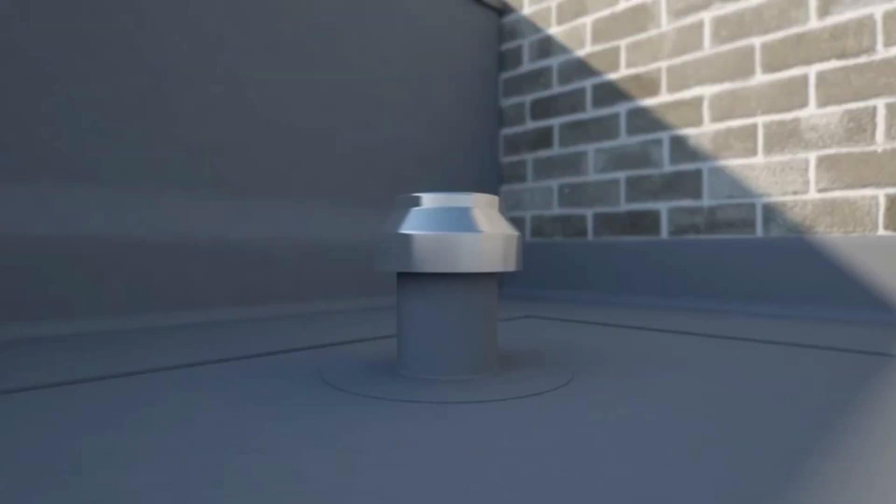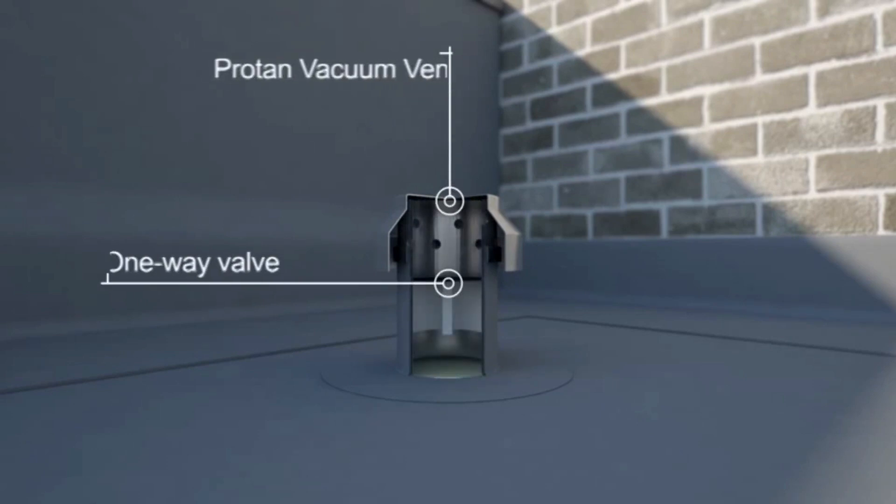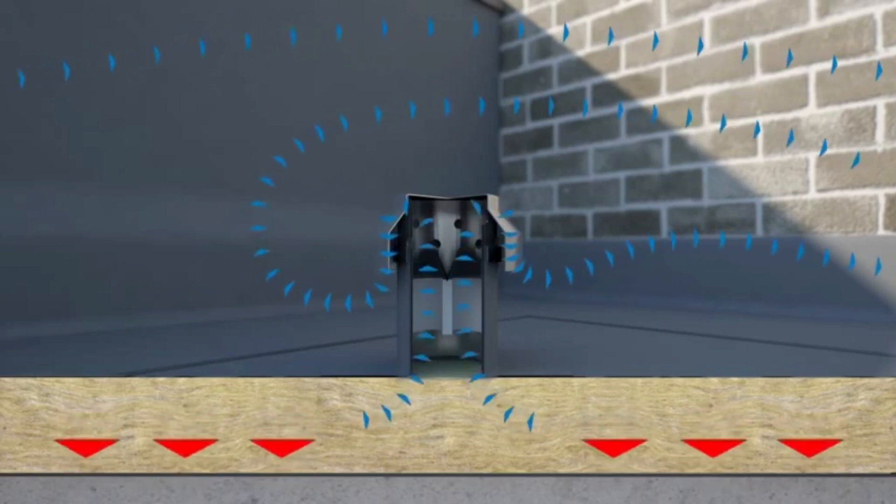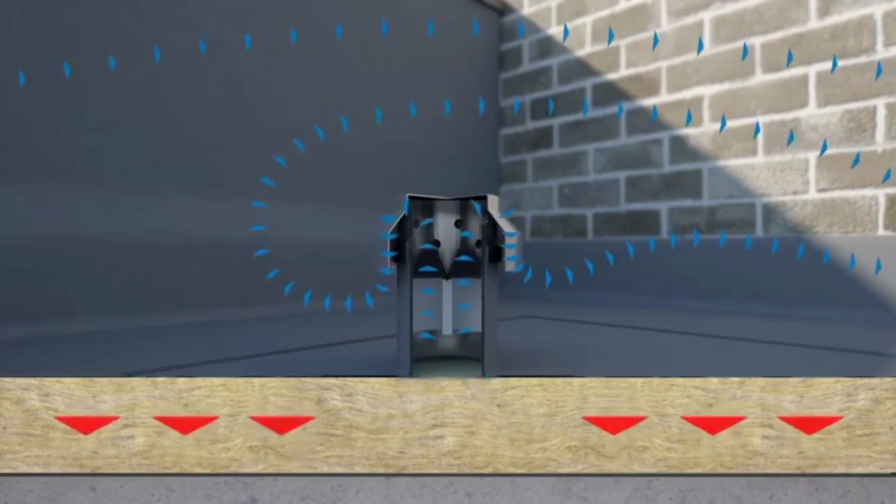The vacuum roof system operates by equalizing the negative pressures caused by the wind. The vents incorporate one-way valves to allow air to escape the roof system. This creates a negative pressure which causes a suction effect beneath the membrane. As the wind speed increases, the negative pressures will increase, causing the system to be pulled down with greater force.